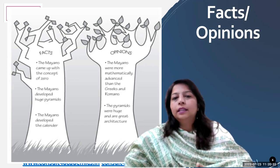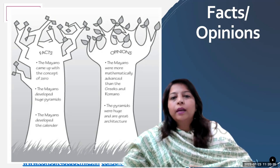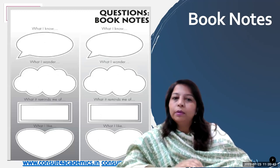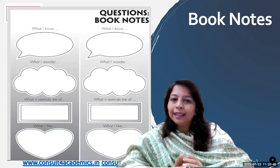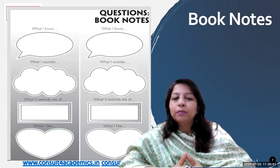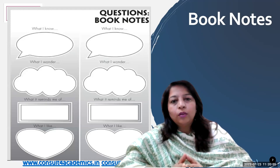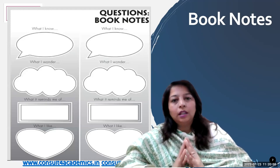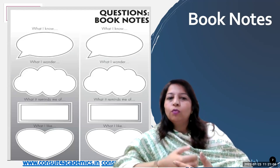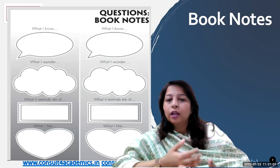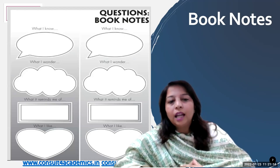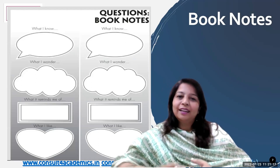Generally, we cannot understand whether the children have read the topic given at home or not. So another graphic organizer is book notes — how children will make notes in the form of booklets: what I know, what I wonder, what it reminds me of, what I like, related to the text. This is also a post-reading graphic organizer. You may ask your students what they already know, what they wonder about, or what they got to know after reading the text, and how they can integrate the same with real life.